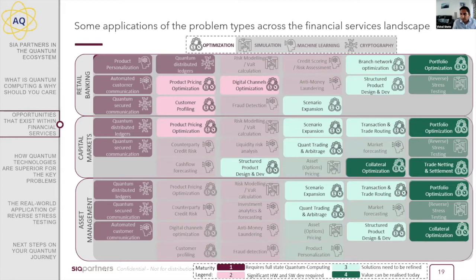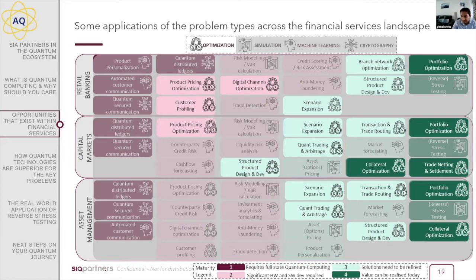A mid-sized European retail bank has about 100–150 billion euros in this high-quality liquid assets buffer. Even a 10–50 basis point improvement — a 0.5% improvement in returns — which is very much possible with the models we're looking at, creates quite a big return. There are other optimization challenges for retail banks, such as optimizing the branch network — where is the optimal place to have branches — and structured product development and design.